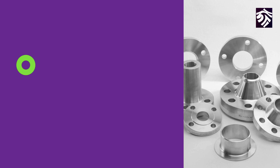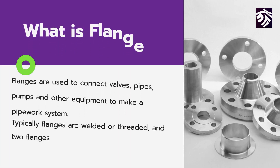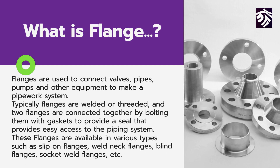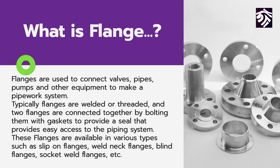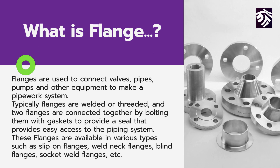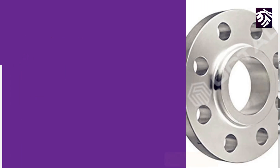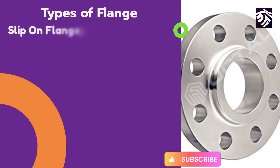Flanges are used to connect valves, pipes, pumps, and other equipment to make a pipework system. Typically flanges are welded or threaded, and two flanges are connected together by bolting them with gaskets to provide a seal that provides easy access to the piping system. These flanges are available in various types such as slip-on flanges, weld neck flanges, blind flanges, socket weld flanges, and others.